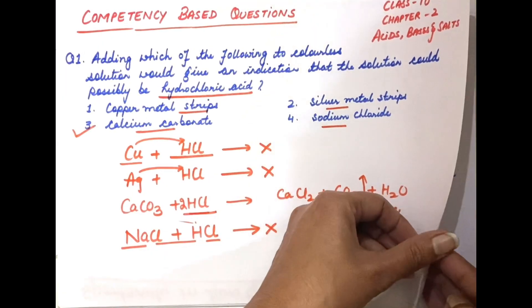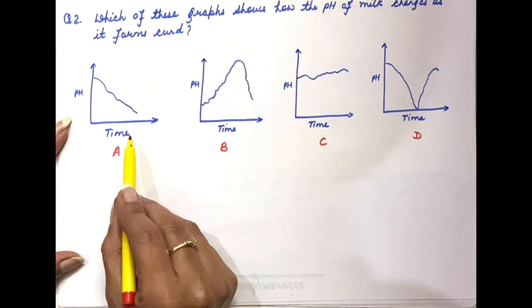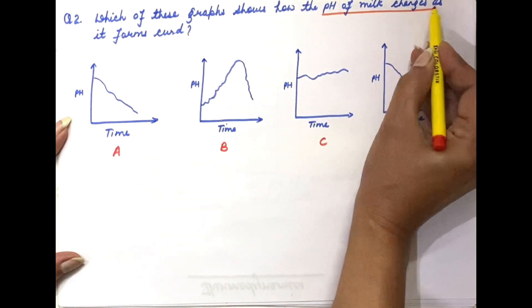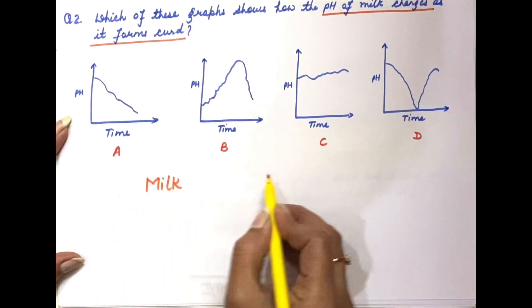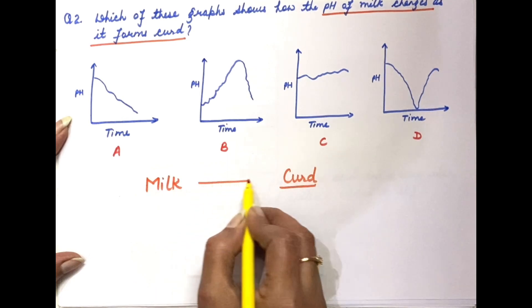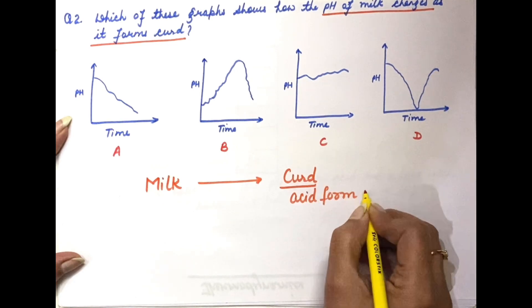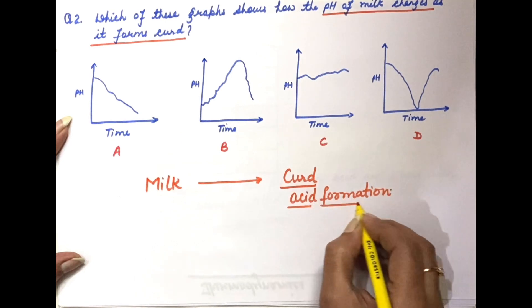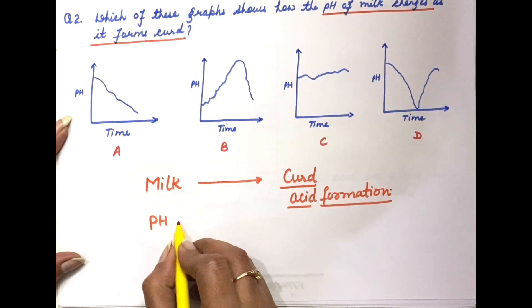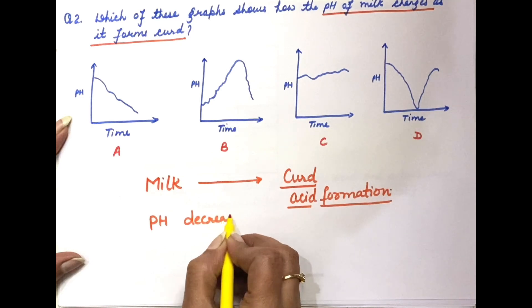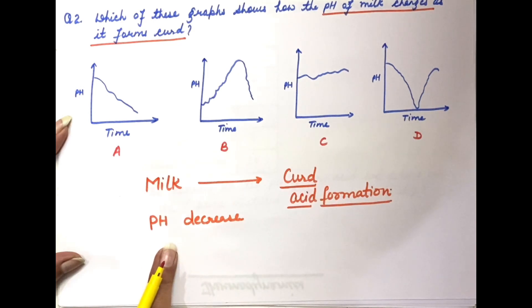Moving on to the second question: which of these graphs shows how the pH of milk changes as it forms curd? सबसे पहले हमें पता होना चाहिए कि milk जब curd में change होता है, तो acid formation होती है. Milk changes to curd and curd is acidic in nature. अब अगर acid बनता है, तो pH decrease करती है — acid की pH कम होती है.